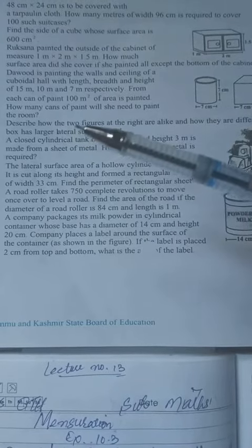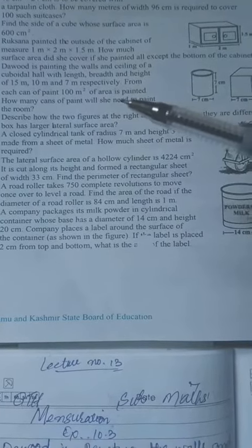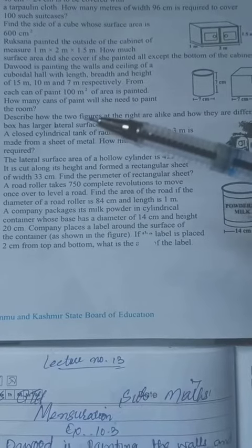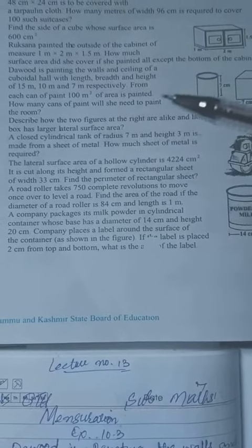From each can of paint, 100 square meters of area is painted. How many cans of paint will we need to paint the room?